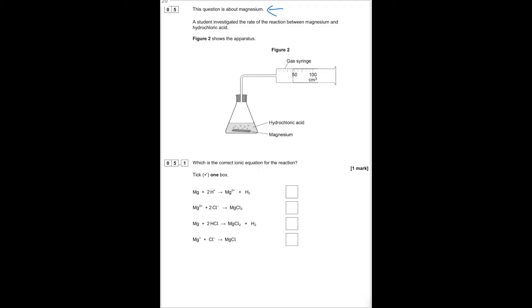This question is about magnesium. A student investigated the rate of reaction between magnesium and hydrochloric acid. What is the correct ionic equation for the reaction? Because we're using magnesium metal it is not an ion. Using hydrochloric acid, it's the H⁺ ions that react with the magnesium. The correct ionic equation is: Mg + 2H⁺ → Mg²⁺ + H₂.